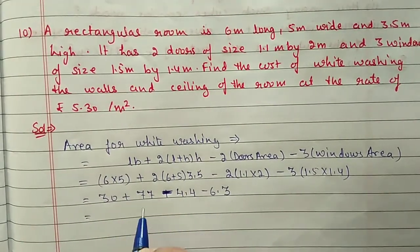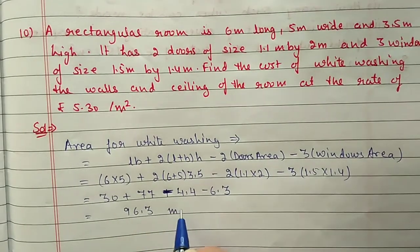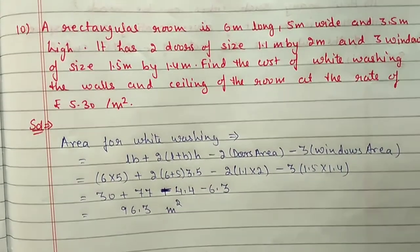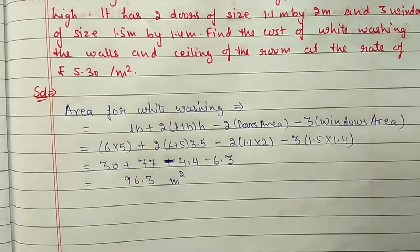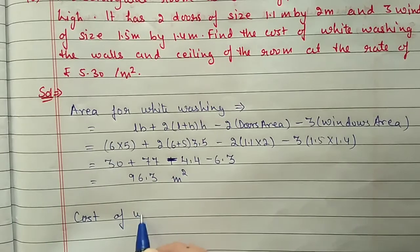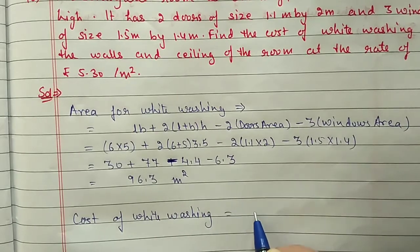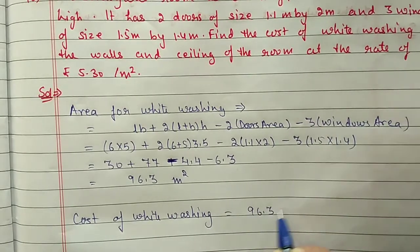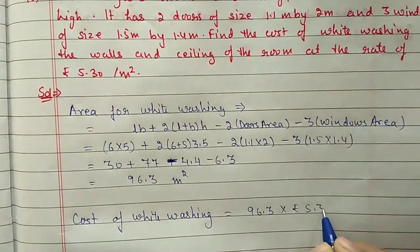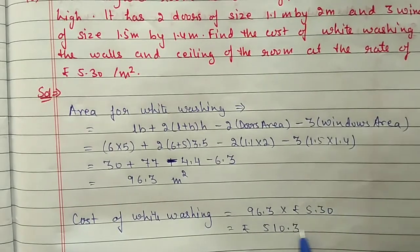Adding the ceiling and walls and subtracting the doors and windows: 30 + 77 − 4.4 − 6.3 = 96.3 m². Now we find the cost of whitewashing: area multiplied by rate = 96.3 into 5.30 = 510 rupees 39 paise.